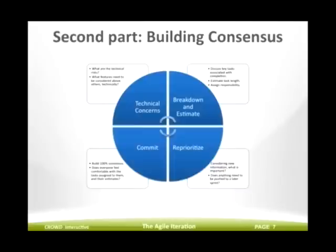Then we reprioritize. This is confusing for some people because we've already prioritized once in creating the backlog — so why do we do it again? One of the core tenets of agility is that LOE, or level of effort, impacts prioritization. Generally, there's an inverse correlation between level of effort and priority — if something takes a lot of effort, it can move to the bottom of the list; if something takes very little effort, the priority goes up because people want to get their features sooner. Once we've reprioritized, the team makes a final commitment and is ready to begin the iteration.